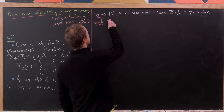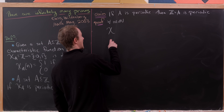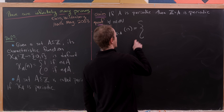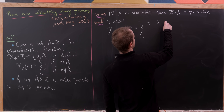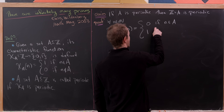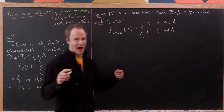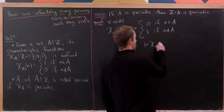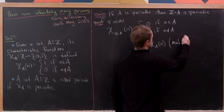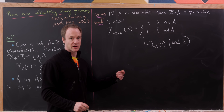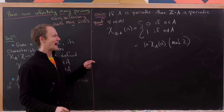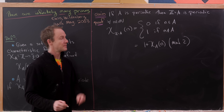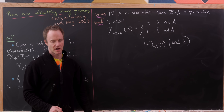For all integers n, chi(Z − A)(n) equals 0 if n is in A, and 1 if n is not in A — it's the opposite of the characteristic function. We can rewrite that as (1 + chi_A(n)) mod 2. If chi_A is periodic, then this right-hand side is periodic, which makes the left-hand side periodic as well. So the complement of any periodic set is periodic.